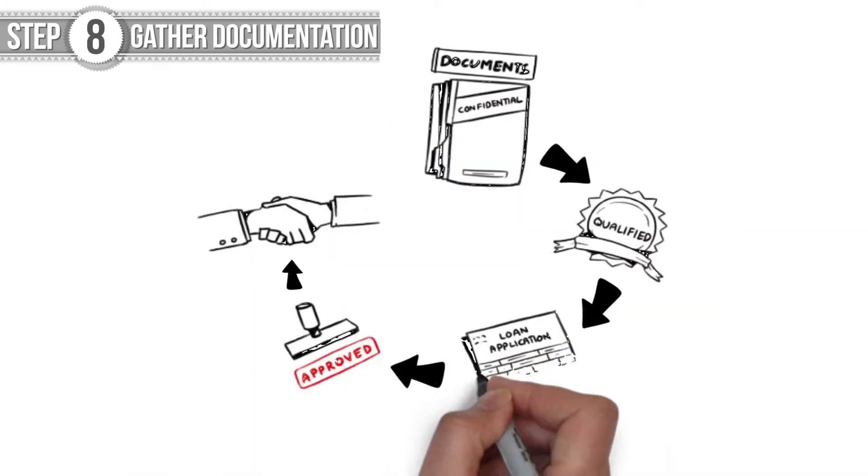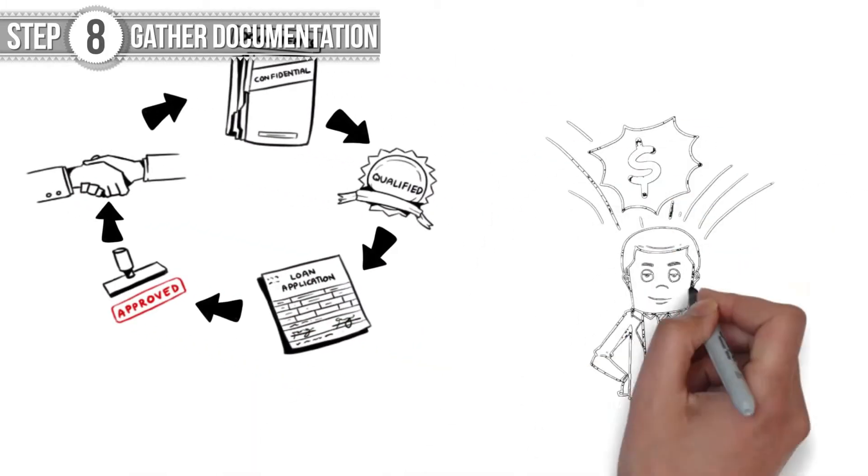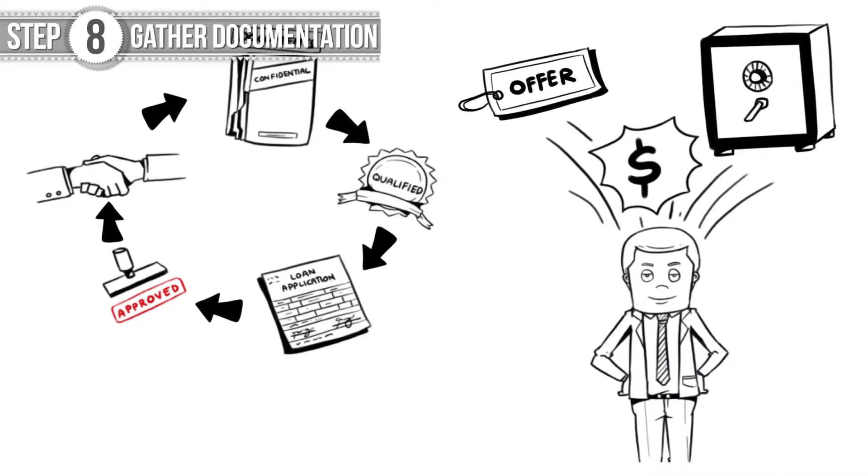Step 8. Continue with the loan process. Give your accepted purchase contract and your income and asset documentation to your loan officer.